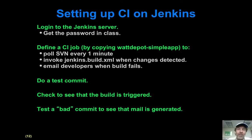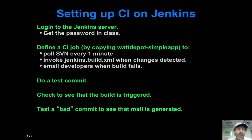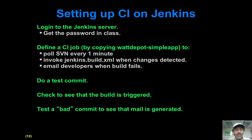Setting up continuous integration: you've got to log into a Jenkins server — I'll give you the password in class. You define a continuous integration job for your project, and the easiest way to do it is to copy the Watt Depot Simple App job I've already set up. Then you want to do a test commit to see that everything works fine, run verify, and make sure that the build is triggered within a minute. It's also important to check what happens when you make a change that actually breaks the system.